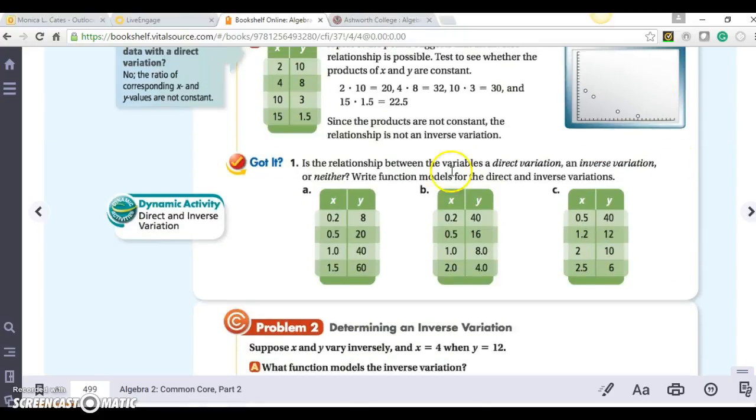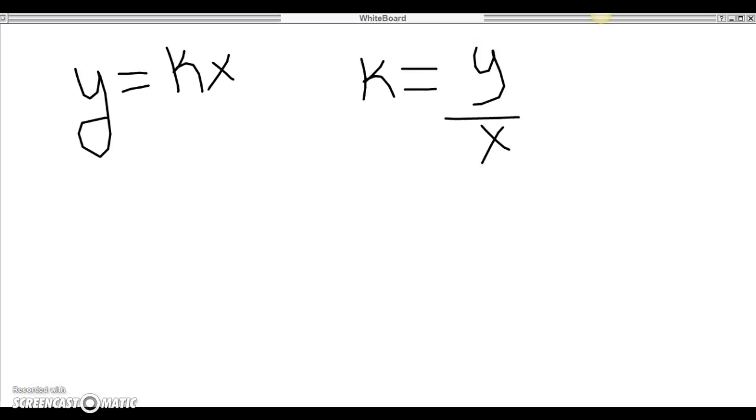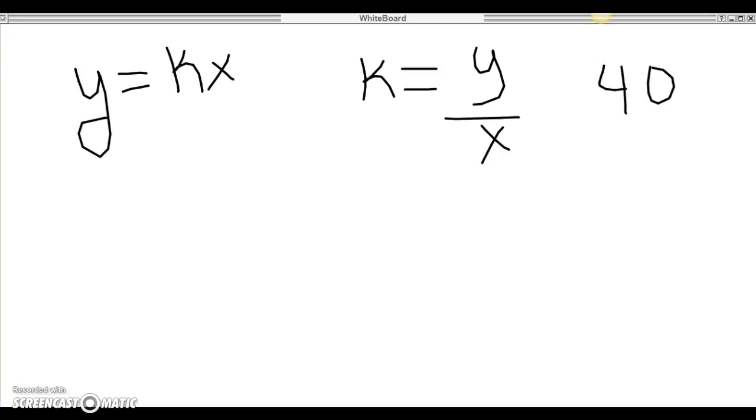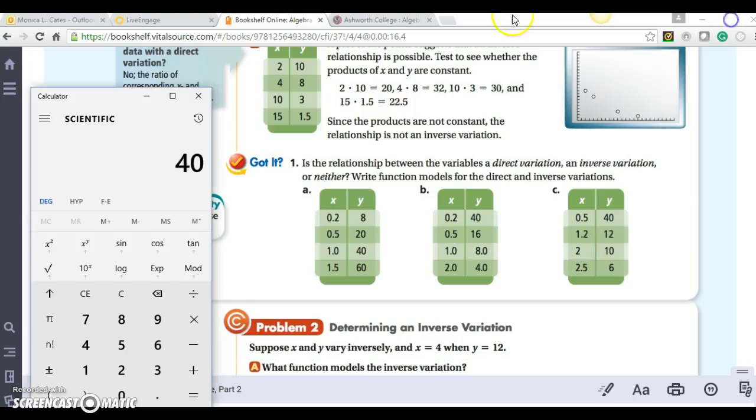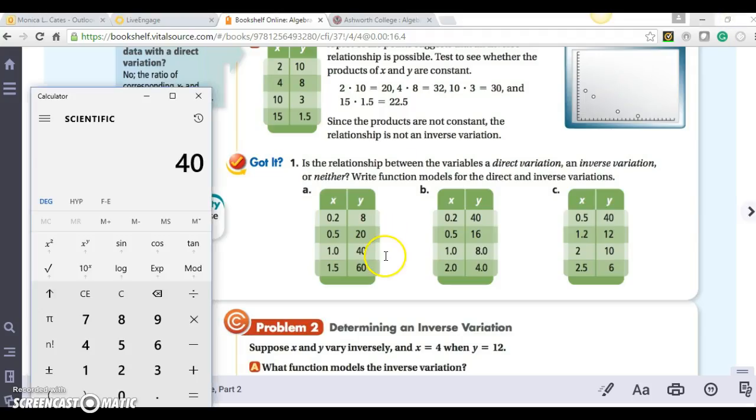We'll do 8 divided by 0.2, gives me 40. Let's write down 40. Then we'll do 20 divided by 0.5, gives me 40 again. Then we have 40 divided by 1, we already know, 40. And we have 60 divided by 1.5, 40 again. So that means that this is a direct variation.